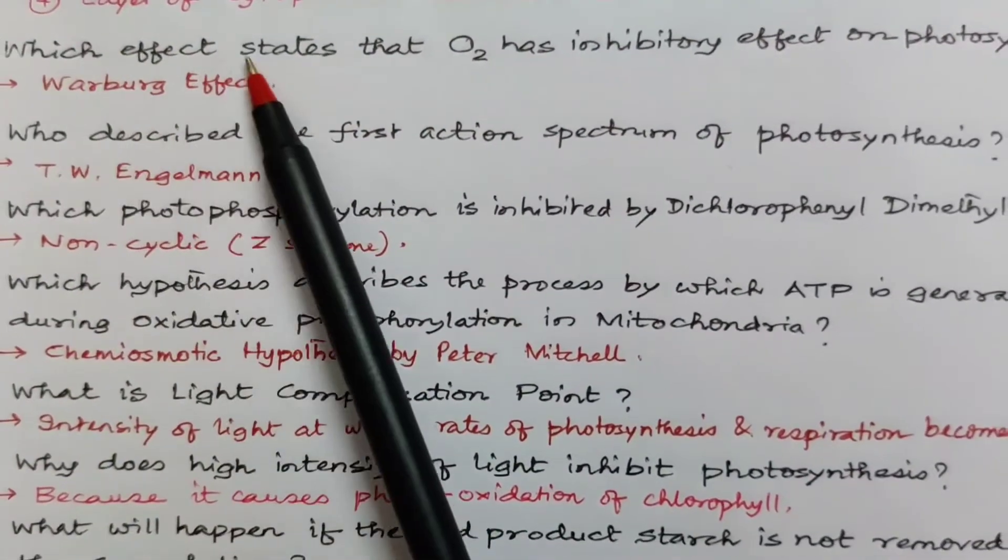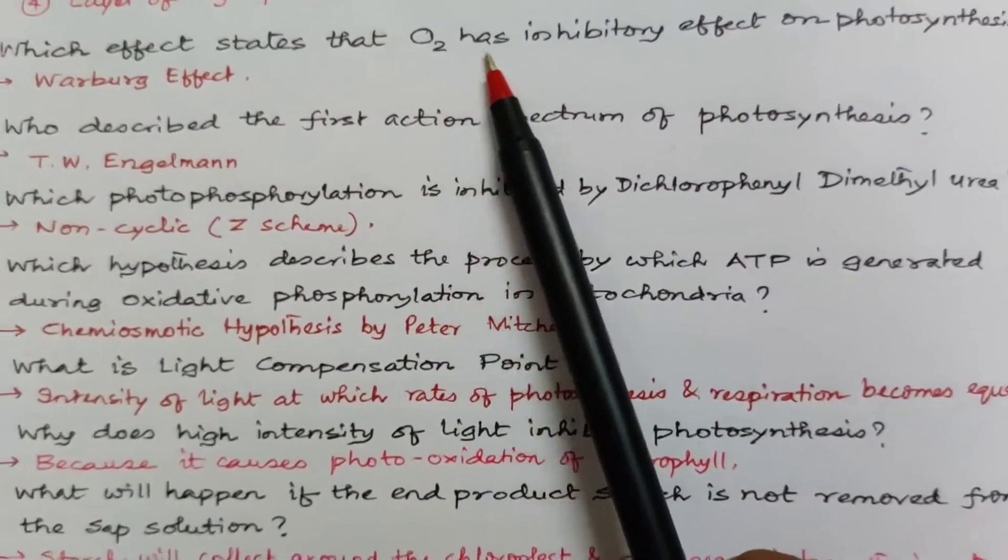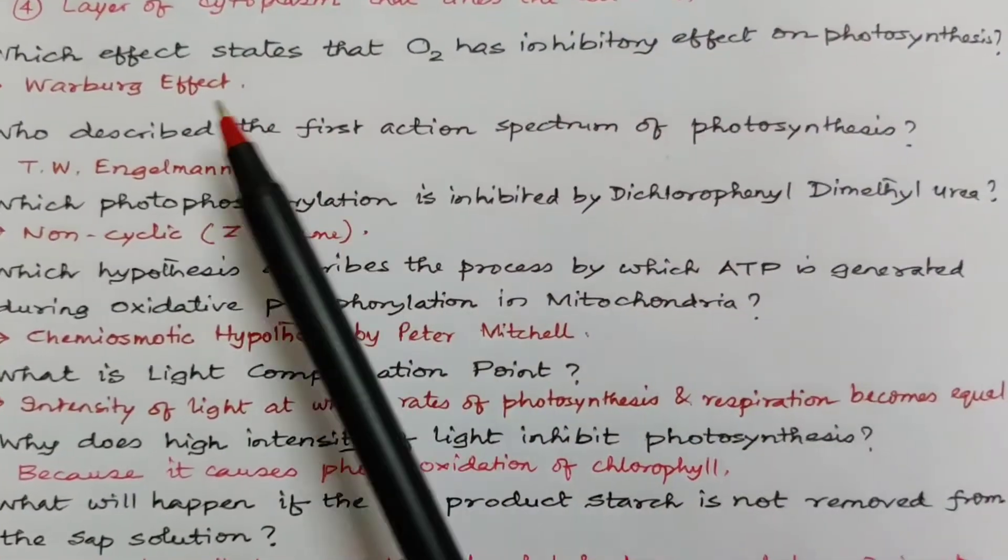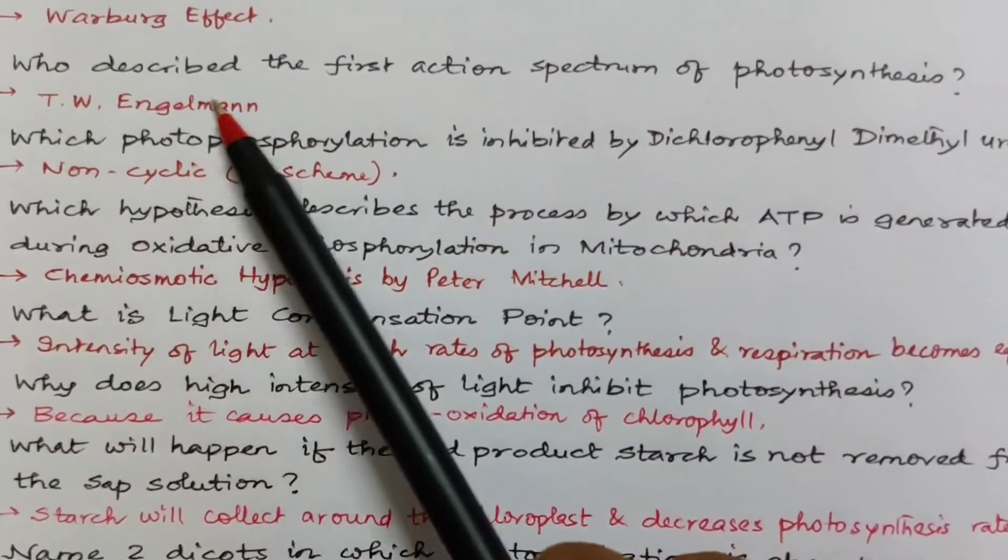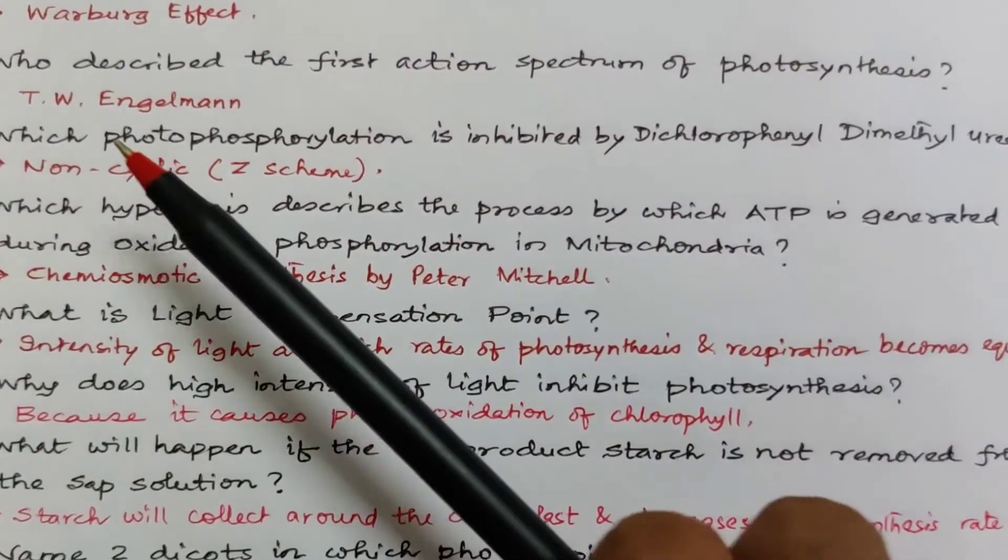The next question is, which effect states that oxygen has inhibitory effect on photosynthesis? It's called Warburg effect. Who described the first action spectrum of photosynthesis? Engelmann.